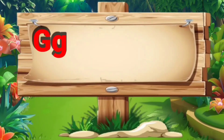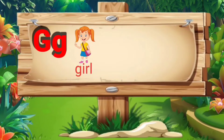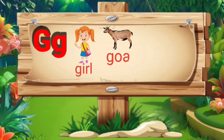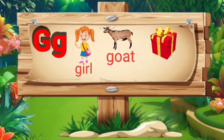G. G for girl: G, I, R, L — girl. G for goat: G, O, A, T — goat. G for gift: G, I, F, T — gift.